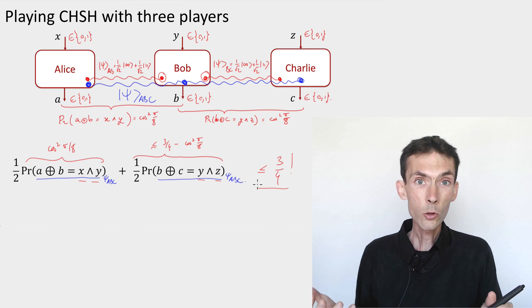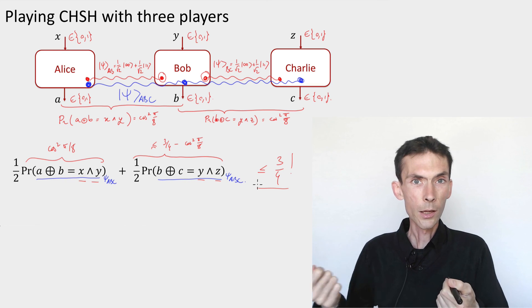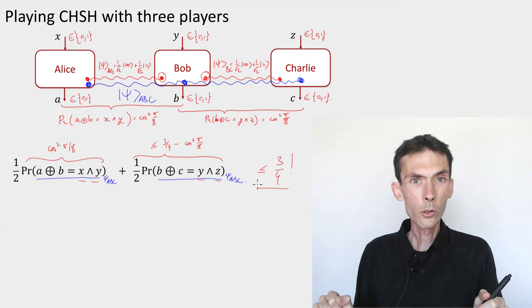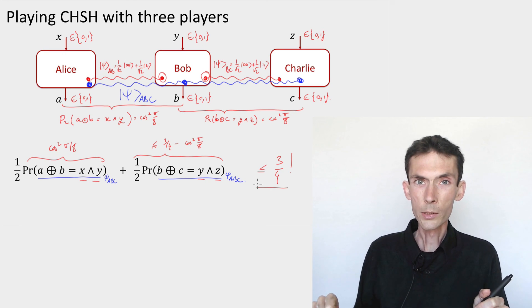And so security, secrecy in cryptography, in particular in quantum key distribution, is going to rely on verifying such strong correlations between the honest parties to serve as a guarantee that there are no further correlations with a potential eavesdropper. So we'll talk much more about this in later modules.